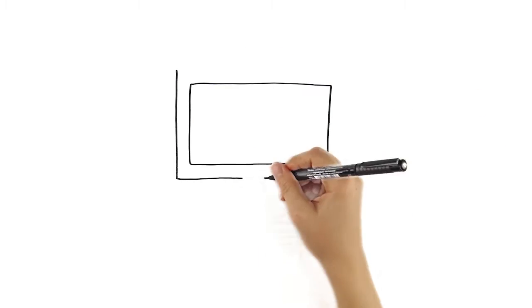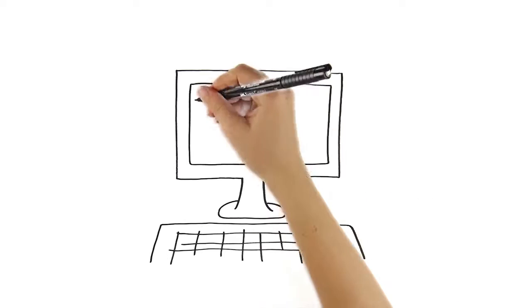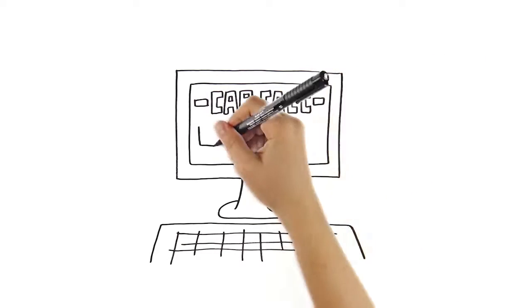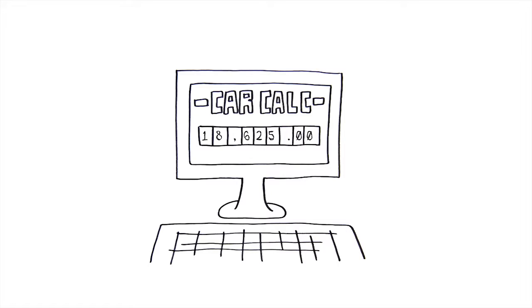Plug your ideal monthly payment into an online car buying calculator to find out how much of a car you can afford, taking projected trade-in value or down payment money into account. Compare that to the car you want by checking the Kelley Blue Book website or Edmunds.com to see what the true retail cost is.